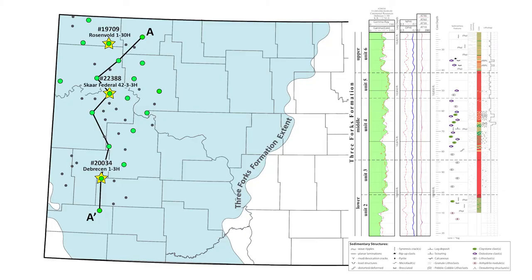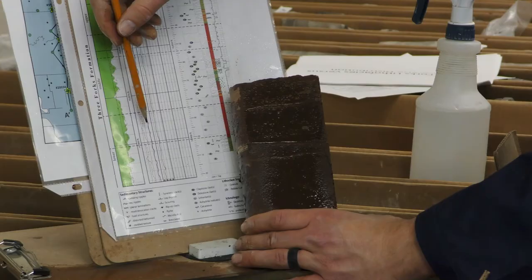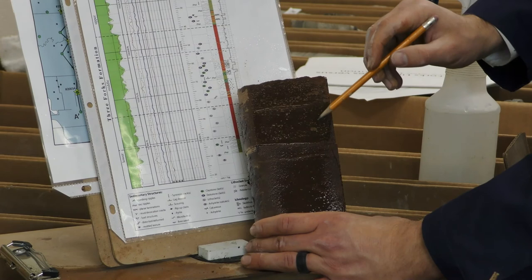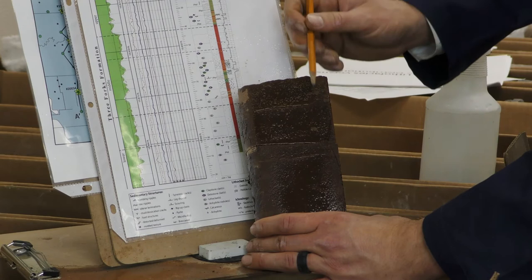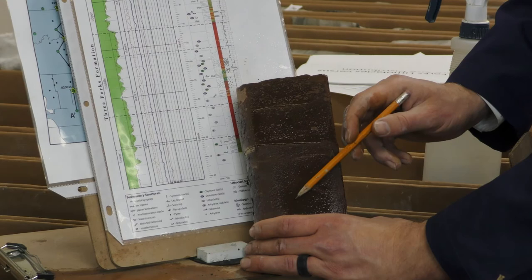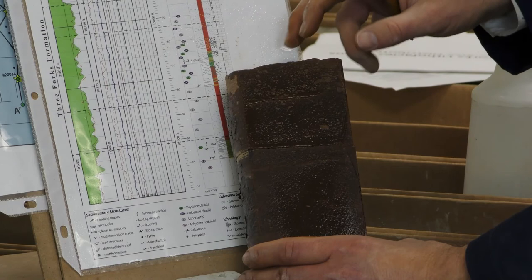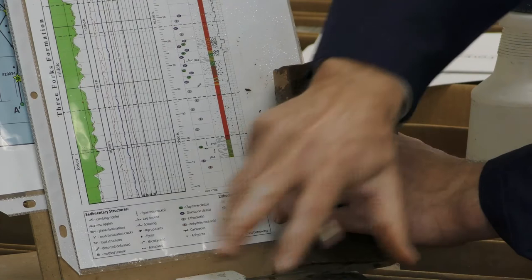Moving up slightly into the upper portions of Christopher unit two — the third bench of the Three Forks where dozens of horizontal wells have been drilled — you can see the laminated silty dolostone facies with scouring surfaces and wave ripples, similar to what we see in the middle and upper Three Forks, though less pronounced. Continuing up into Christopher unit three, the upper portions of the lower Three Forks, there's a slightly higher gamma ray log signature indicating more clay. The laminated silty dolostones disappear and you get into oxidized facies with a lot more clasts or grains — ranging from fine sand to pebble-sized fragments — in an overall fine-grained matrix.